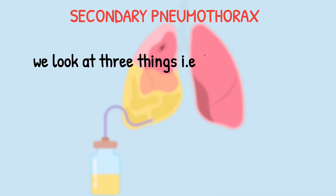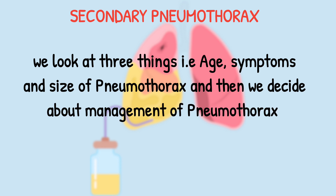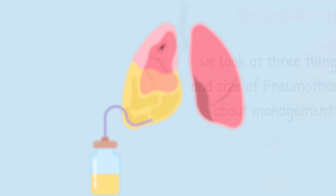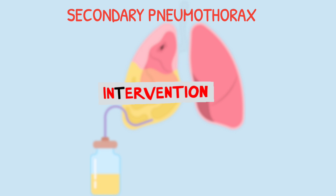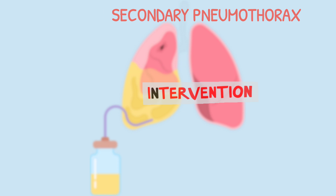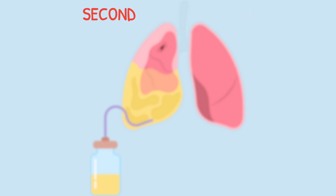When we encounter secondary pneumothorax, we look at three things — just like primary pneumothorax: age, symptoms of the patient, and size of the pneumothorax, and then we decide management accordingly. Always remember: secondary pneumothorax always needs intervention.